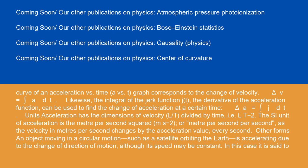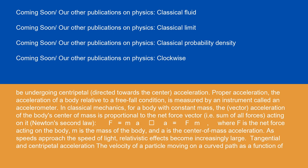An object moving in a circular motion, such as a satellite orbiting the Earth, is accelerating due to the change of direction of motion, although its speed may be constant. In this case, it is said to be undergoing centripetal — directed towards the center — acceleration. Proper acceleration, the acceleration of a body relative to a free-fall condition, is measured by an instrument called an accelerometer.